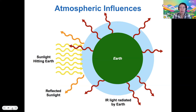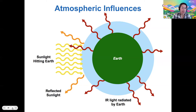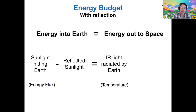Other things can happen though — not all of the sunlight hitting Earth reaches its surface. Some of it is reflected by the edge of our atmosphere, and some is reflected by things like ice and snow on Earth's surface. So if we consider reflected sunlight, we need to account for how much is reflected in order to determine how much infrared light Earth needs to radiate to maintain balance. So: sunlight in minus reflection equals infrared radiation out.